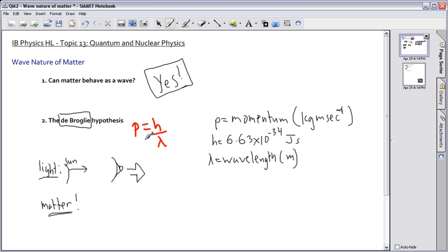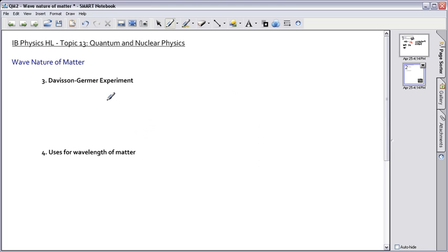Now we can also talk about how we can verify this. So this is an experiment that the IB wants you to learn about. It's called the Davison-Germer experiment. And it's a pretty simple, straightforward idea. They actually shot electrons, which is something with matter.